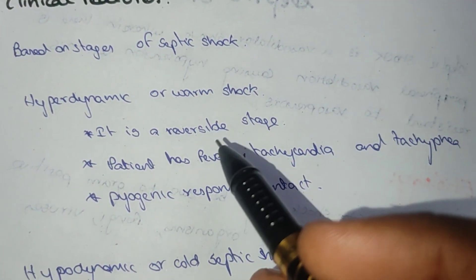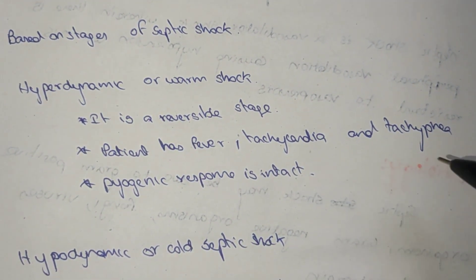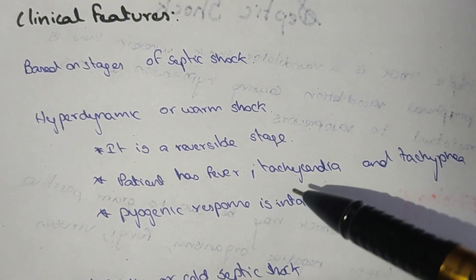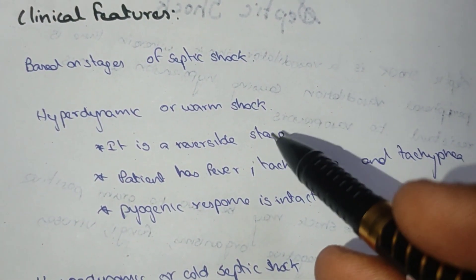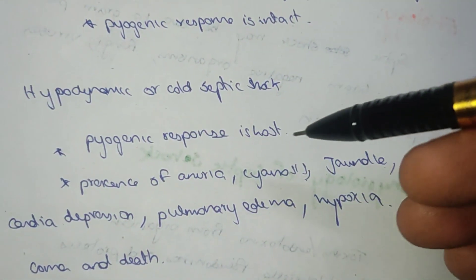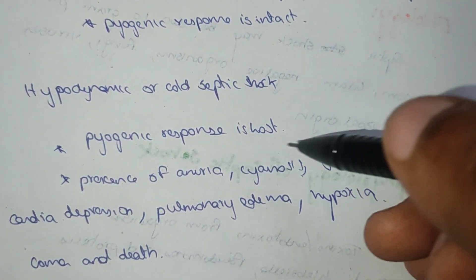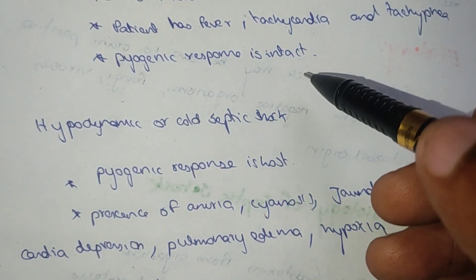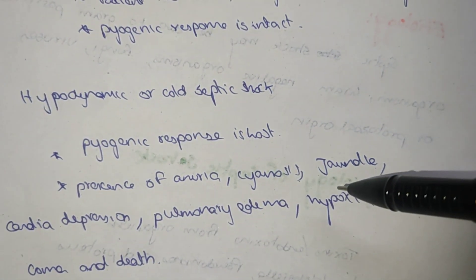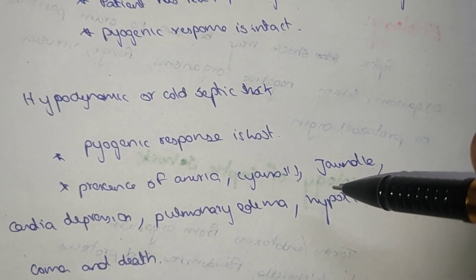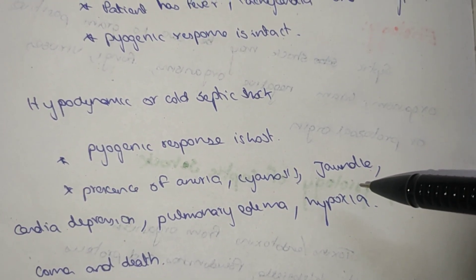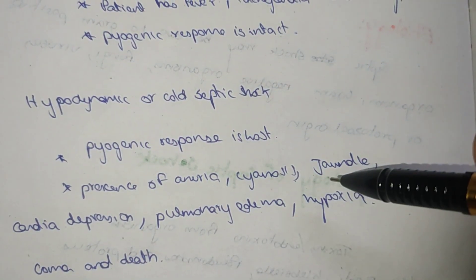Clinical features: hyperdynamic or warm shock is the reversible stage presenting with fever, tachycardia, tachypnea, and intact pyrogenic response. Cold or hypodynamic septic shock features include presence of anuria, cyanosis — bluish discoloration of nails and skin — and jaundice with yellowish scleral discoloration and increased bilirubin levels.